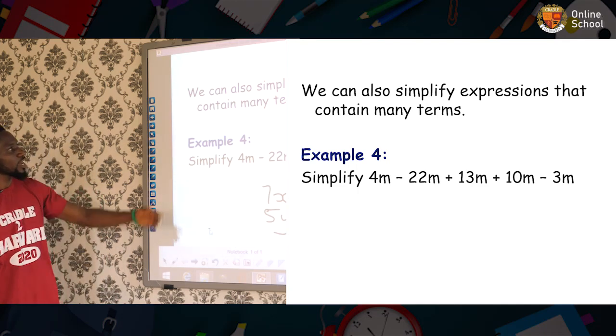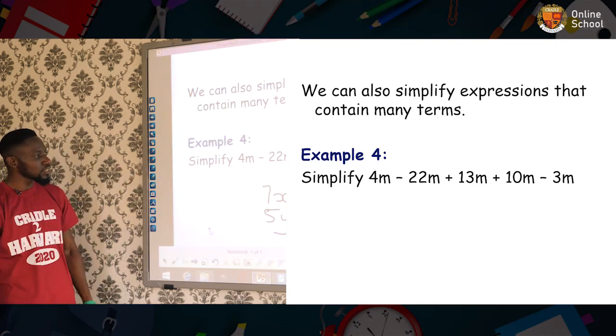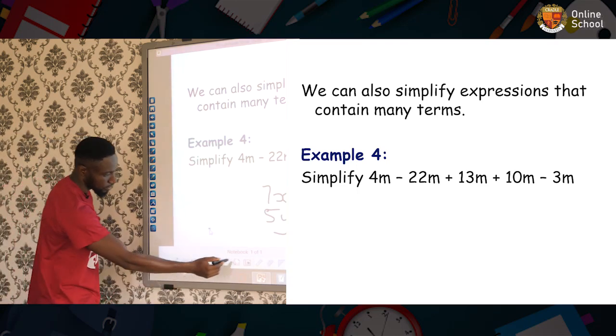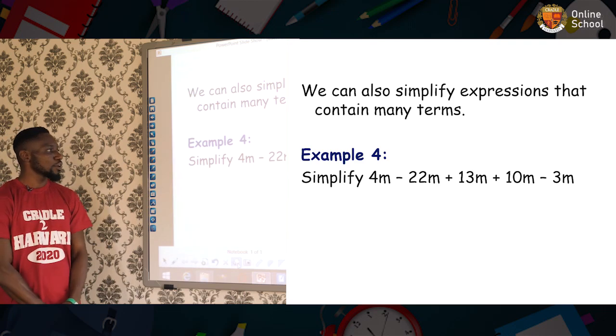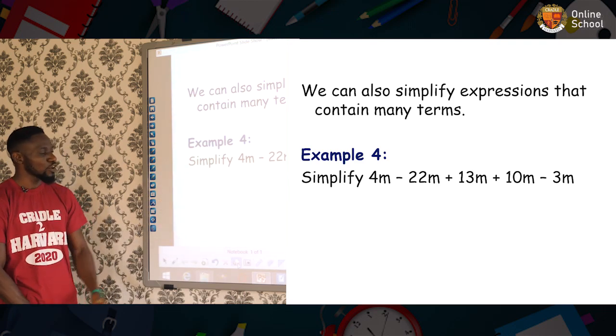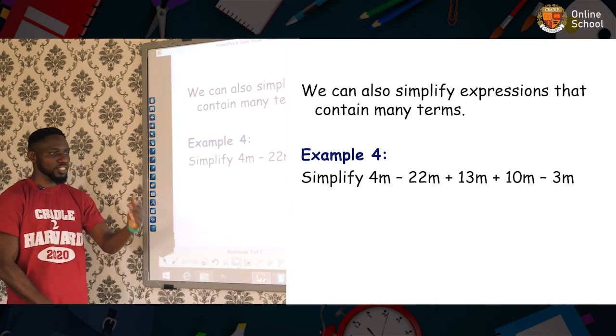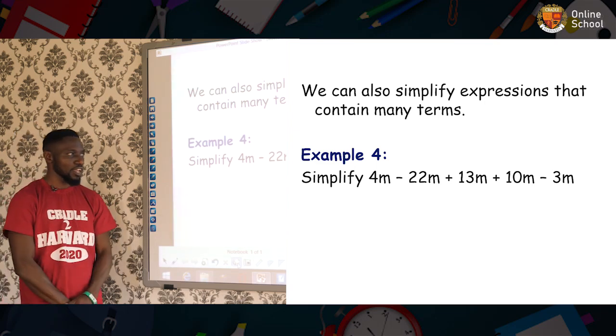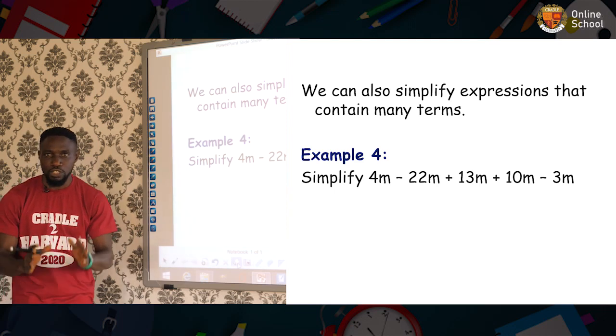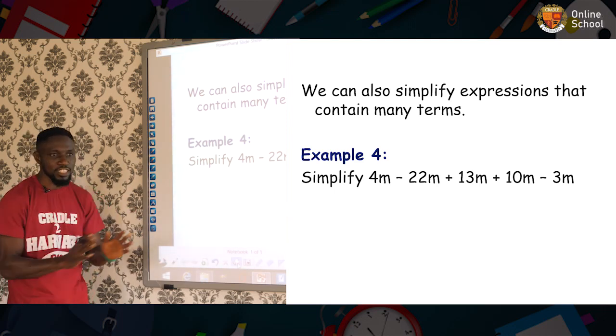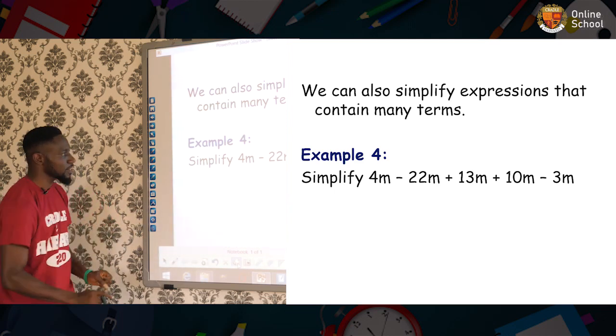You see, we can also simplify expressions that contain many terms. Let's look at this for example. It says simplify 4m - 22m + 13m + 10m - 3m. Now, the first thing we do is that we'll group them, those that are positive. The positive ones together and then the negative ones together, and then we'll solve. That's the first thing we'll do.